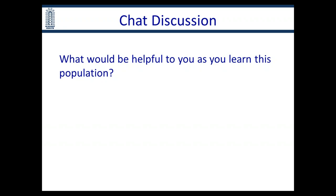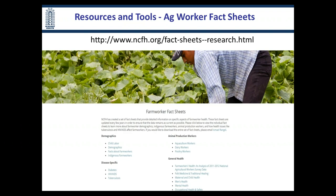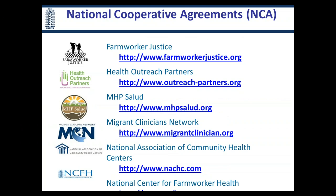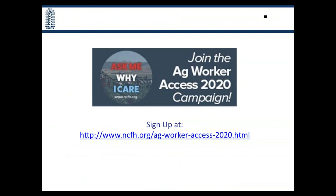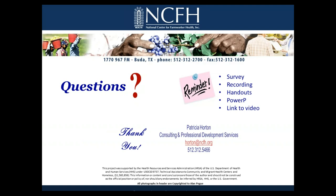We have many resources available on our website — be sure to visit it. You can see different topics, and materials are easy to download and save to your computer. We also want to point out the National Cooperative Agreements — visit their websites as they have great information for everyone. You may have heard about our Ag Worker Access 2020 campaign — if you haven't signed up, please consider doing so and share it with your friends and family. We have just a little bit of time for some questions — use your chat box to type in your question.